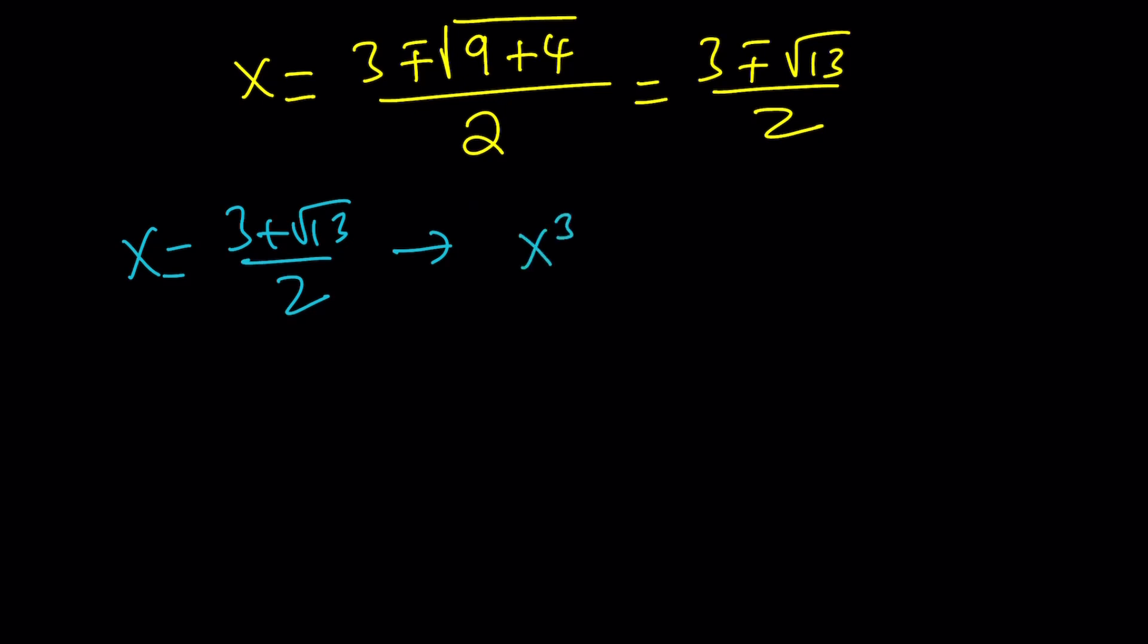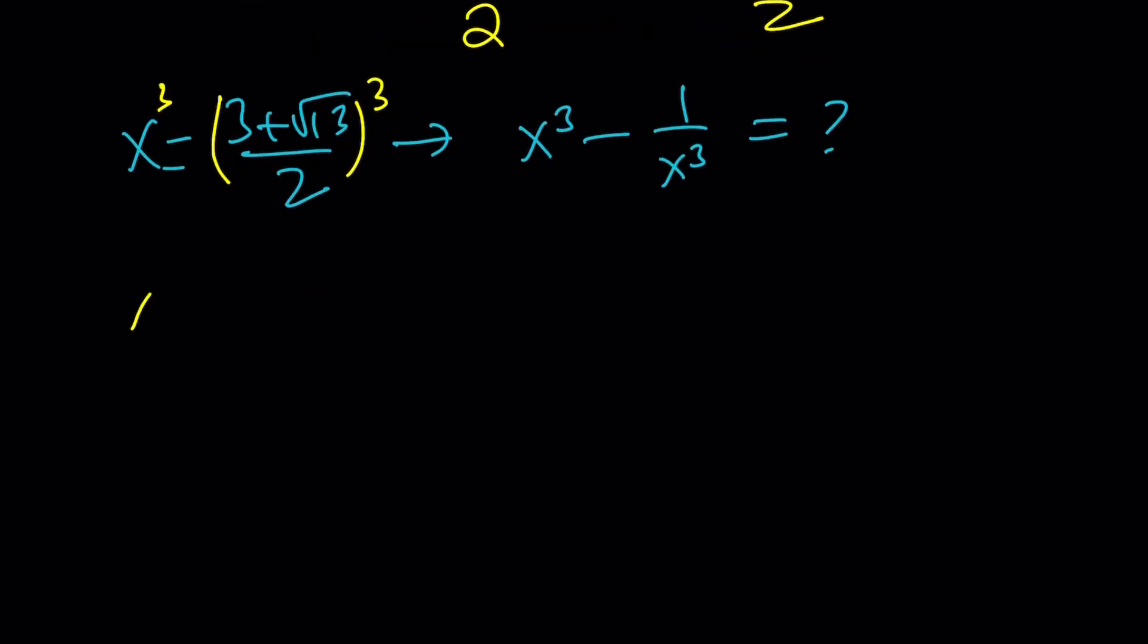We are supposed to evaluate x cubed minus 1 over x cubed, so I basically need to cube this expression. If you cube both sides, then you're going to get the cube of a fraction or a quotient, which is going to be the quotient of 2 cubes. So we're going to cube the numerator, and we're going to cube the denominator, which is 8.